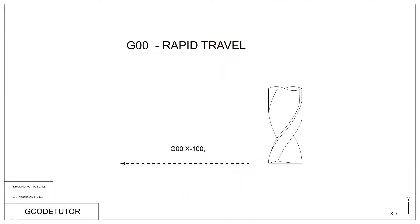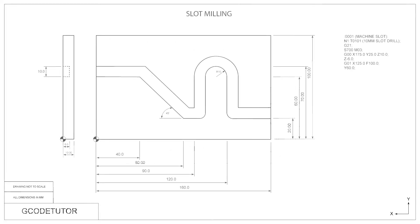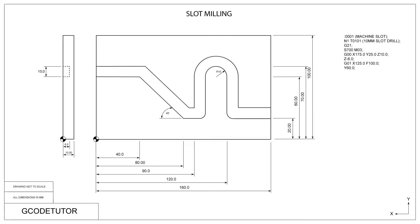For example, here is G00, the rapid travel move. I explain its uses and best practices, and then we write a program line by line to show how it's used.